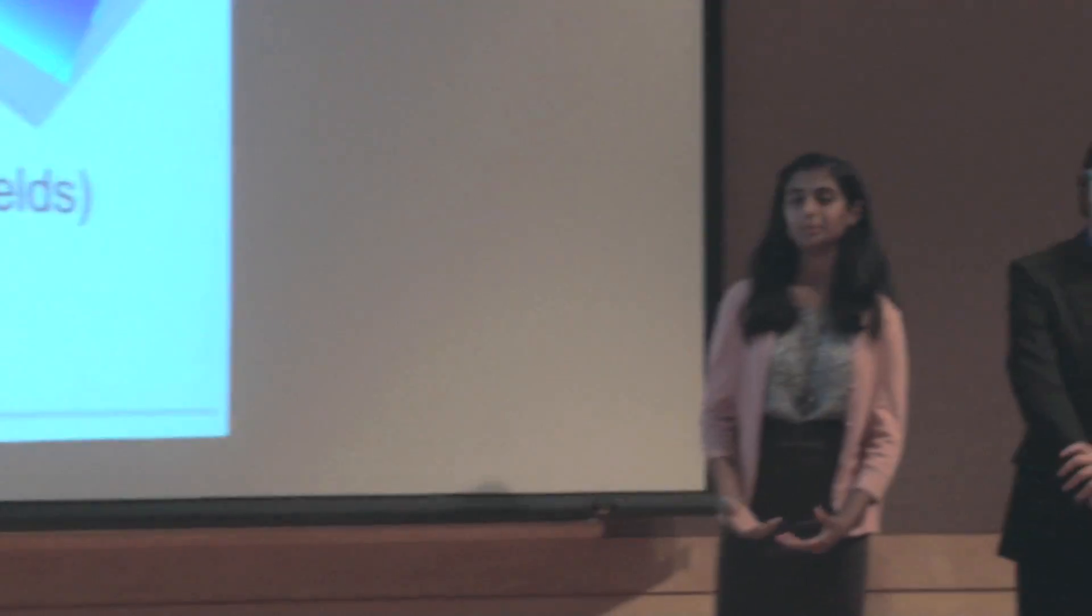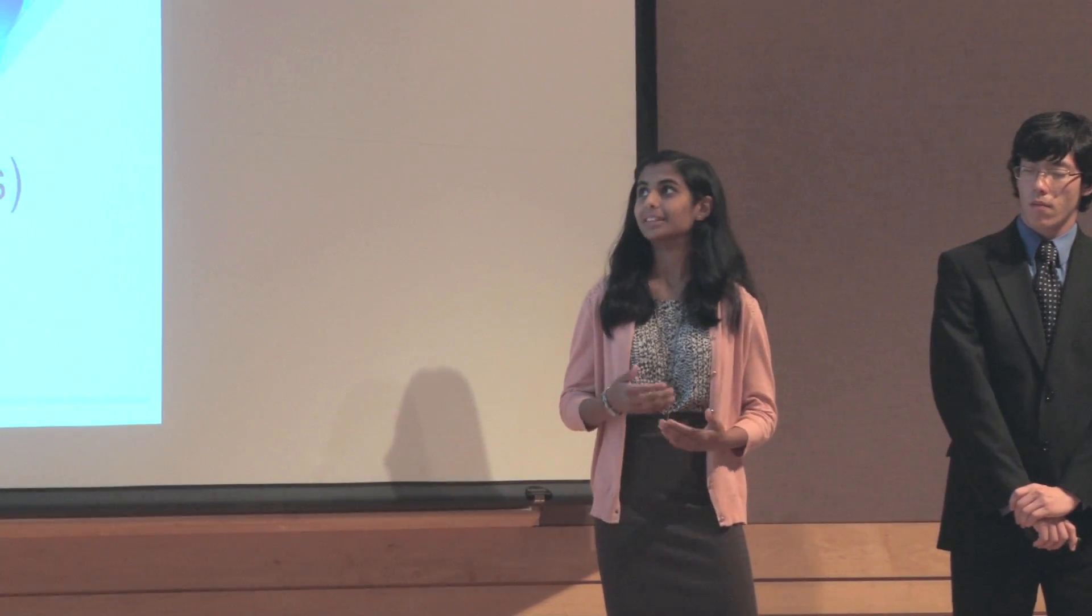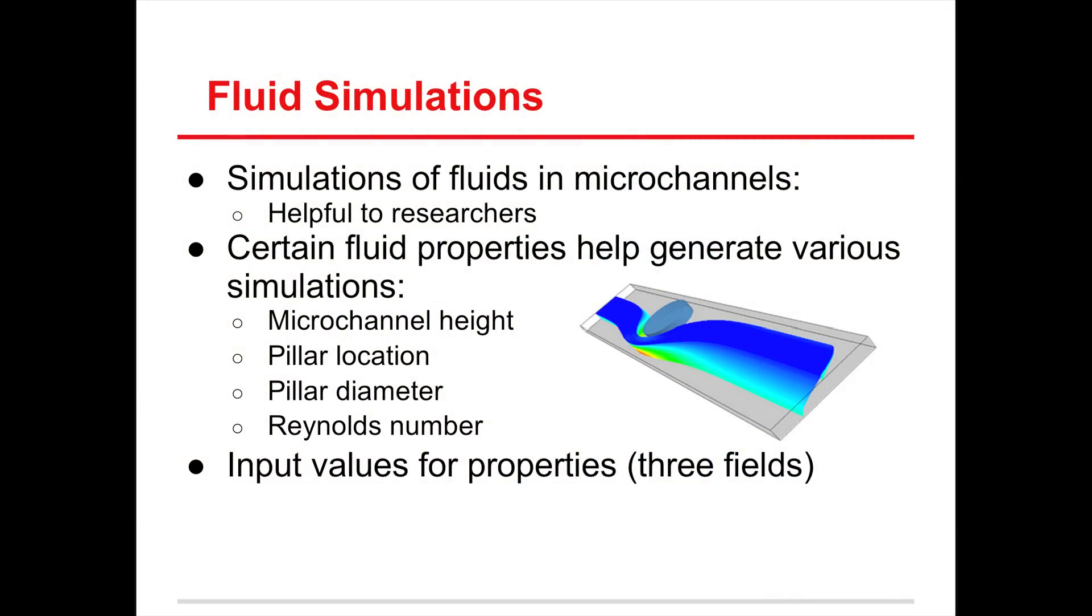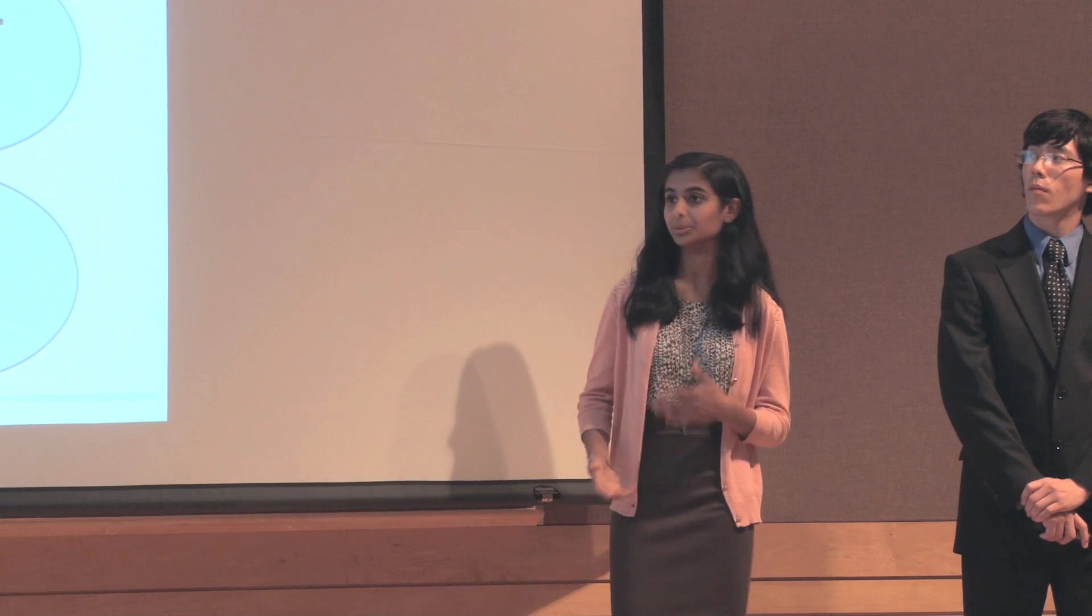Another one of our goals was to develop fluid simulations to be relayed to the front end of the application. These simulations of fluids are very helpful to researchers, as for example, in cancer research, we can use fluid properties and pillars modeled in microchannels to help remove blood cancer cells from healthy blood cells. Certain fluid flow properties can help us generate these various simulations, including pillar location, pillar diameter, microchannel height, and the Reynolds number. In order to access our application, we can input properties in three fields: a minimum number, a maximum number, and an interval. So for example, for our minimum number, if you put in two, and our maximum, we put in eight, we would be sending four tasks to a server in an interval of two, and therefore we can easily distribute this to work with clients.